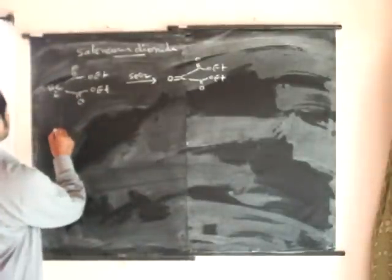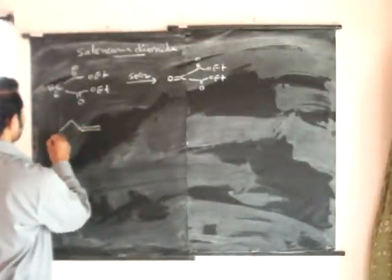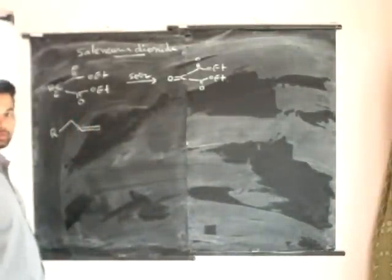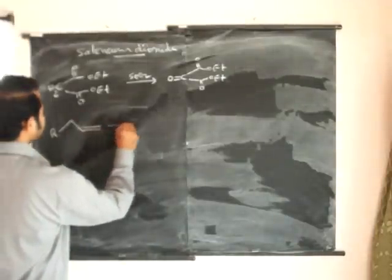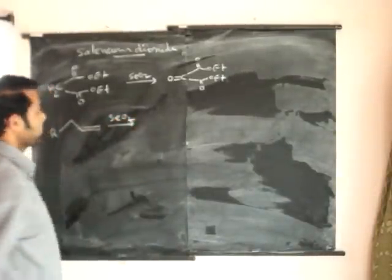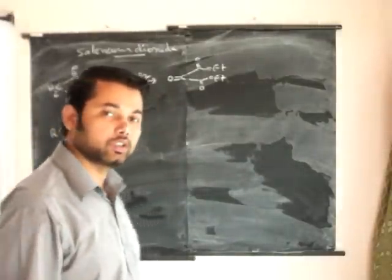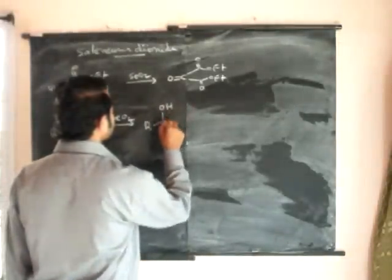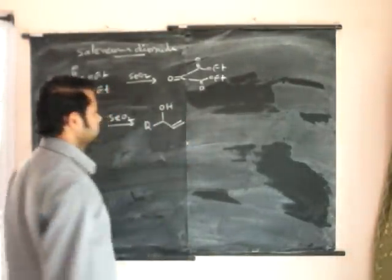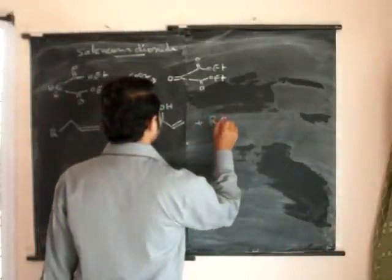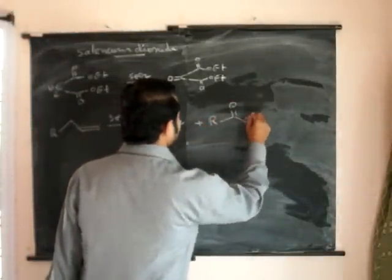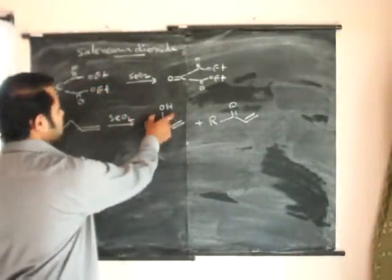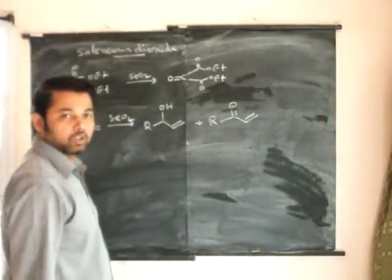For example, this is an alkene and here these are the allylic carbons. If we perform this selenium dioxide reaction over this alkene, then there are possibilities of two products: one is allylic alcohol, and the second one is an alpha-beta unsaturated ketone. In general, the allylic alcohol is major and the ketone is minor.